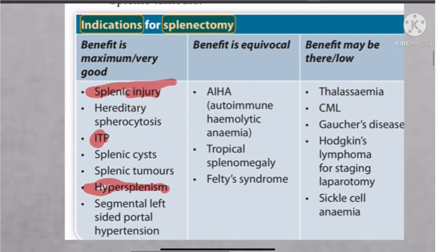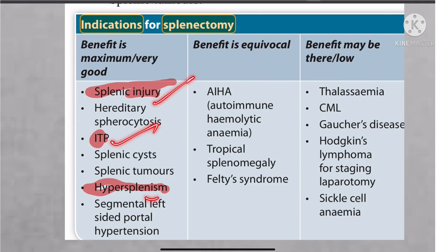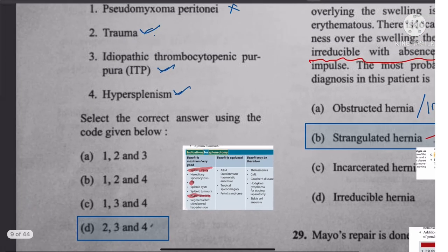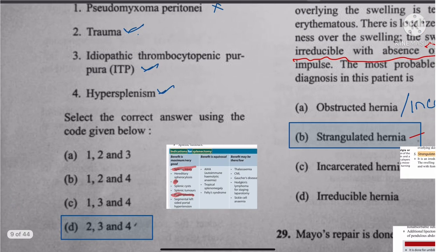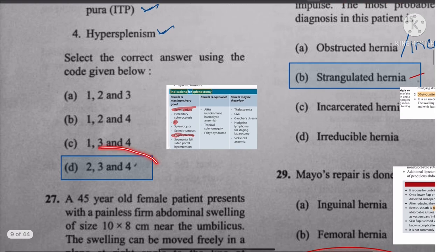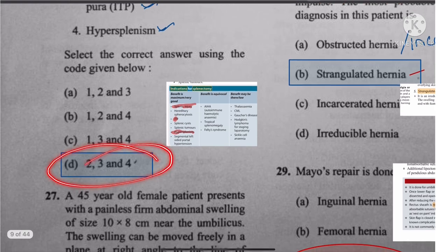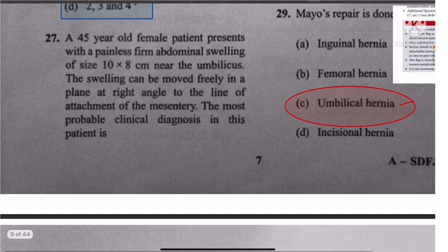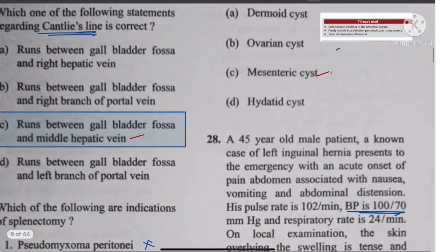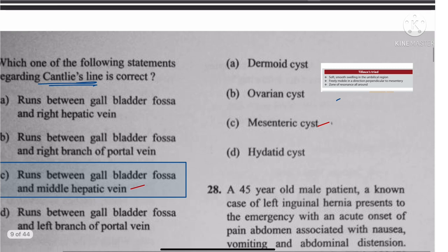Question 26: Indications of splenectomy include splenic injury, ITP, and hypersplenism. Pseudomyxoma is not an indication. The answer is 2, 3, and 4.